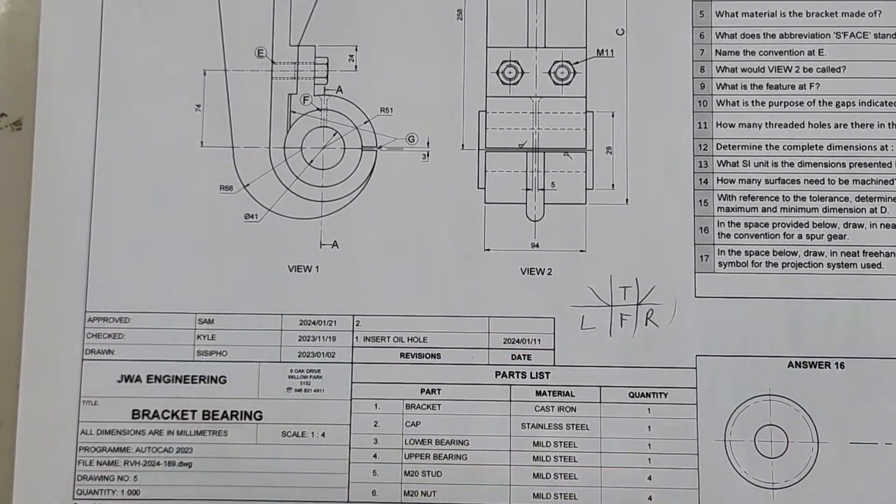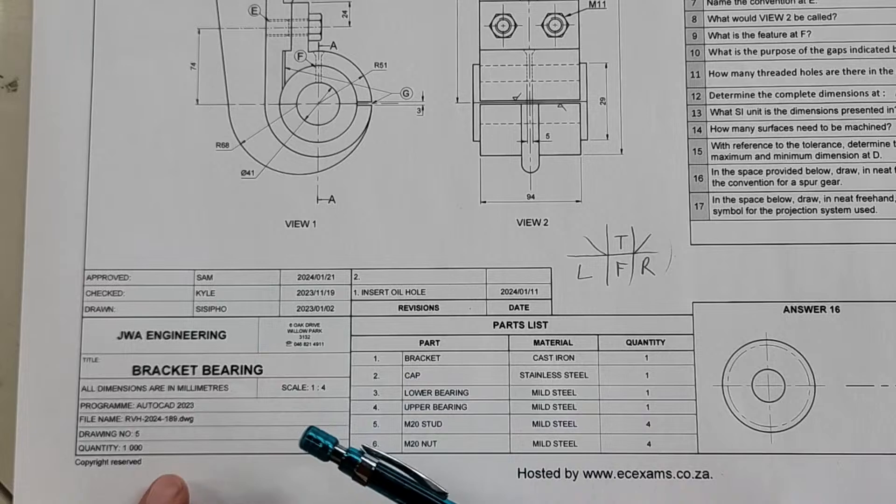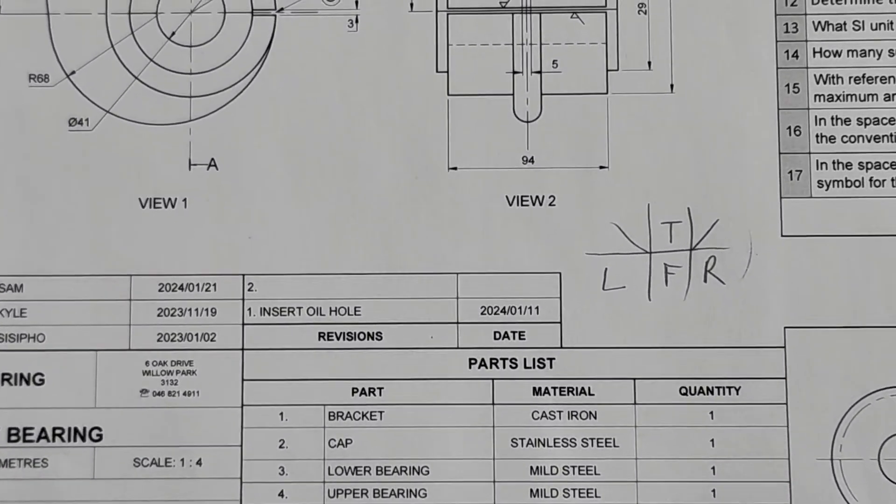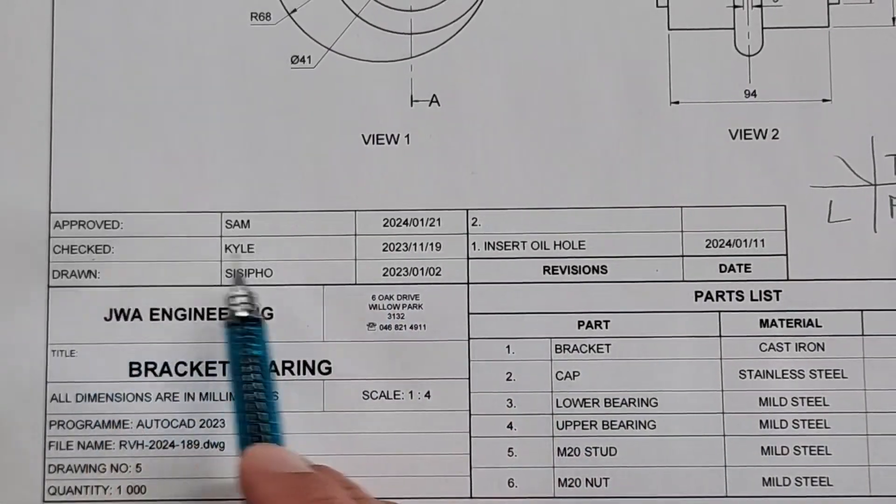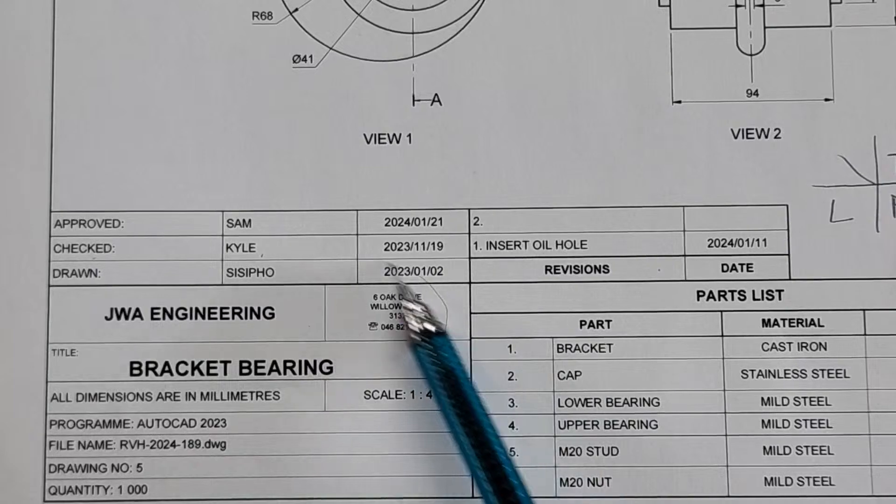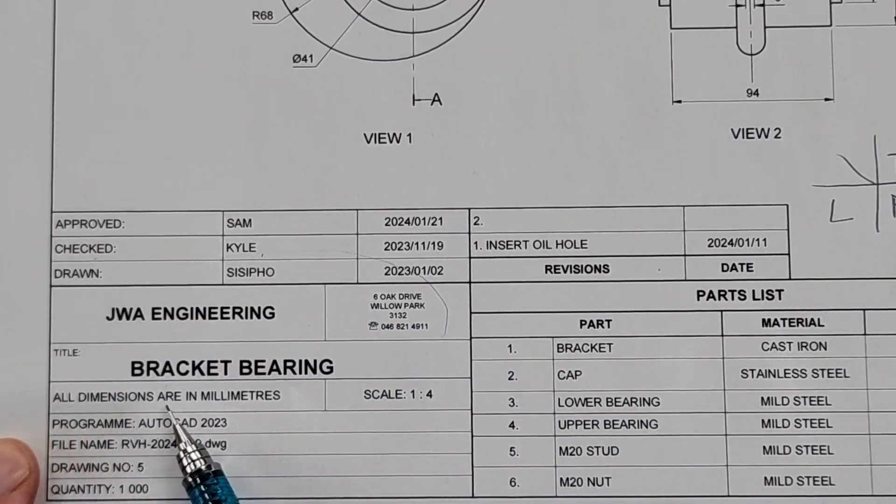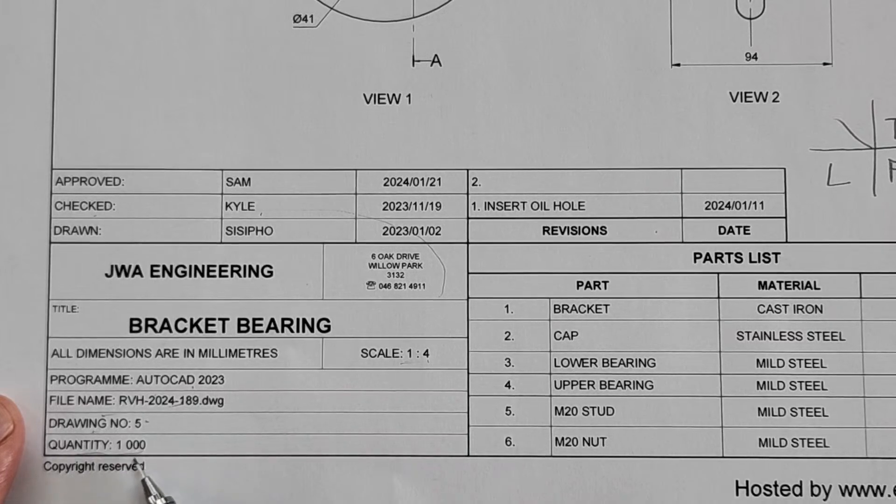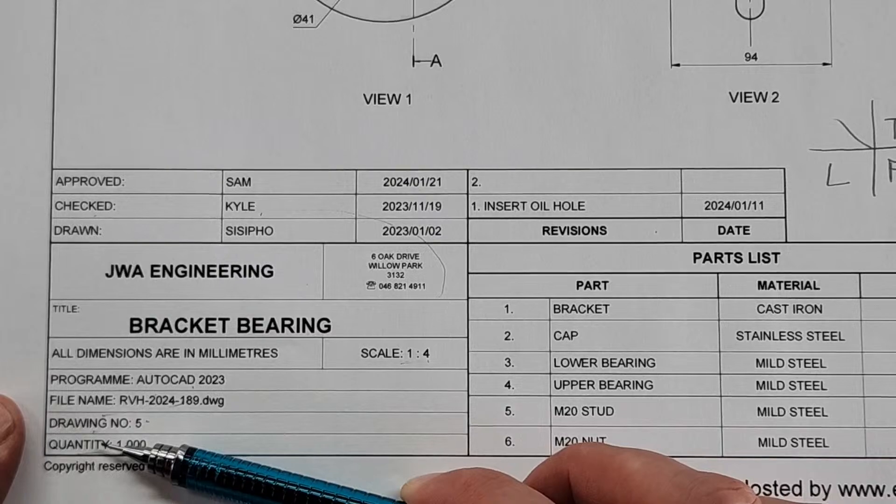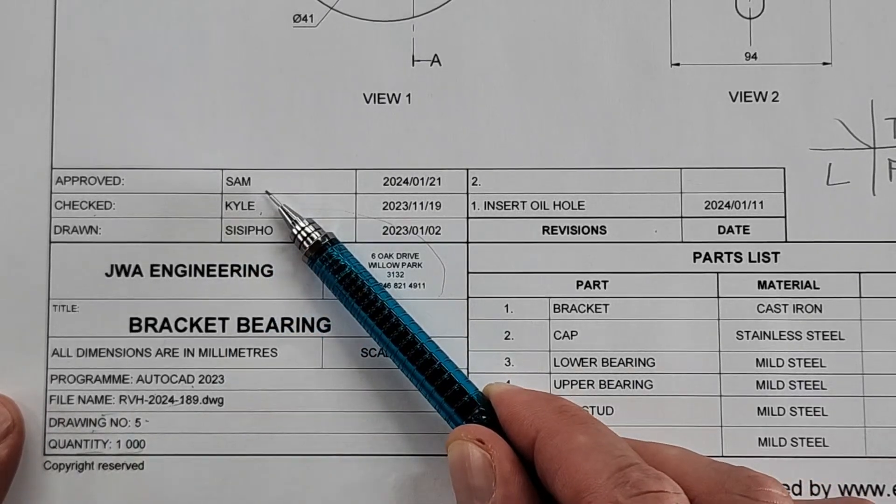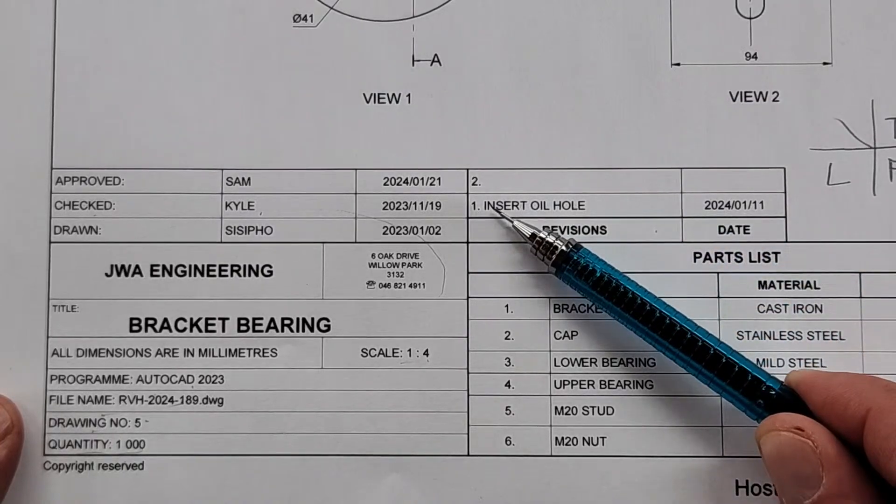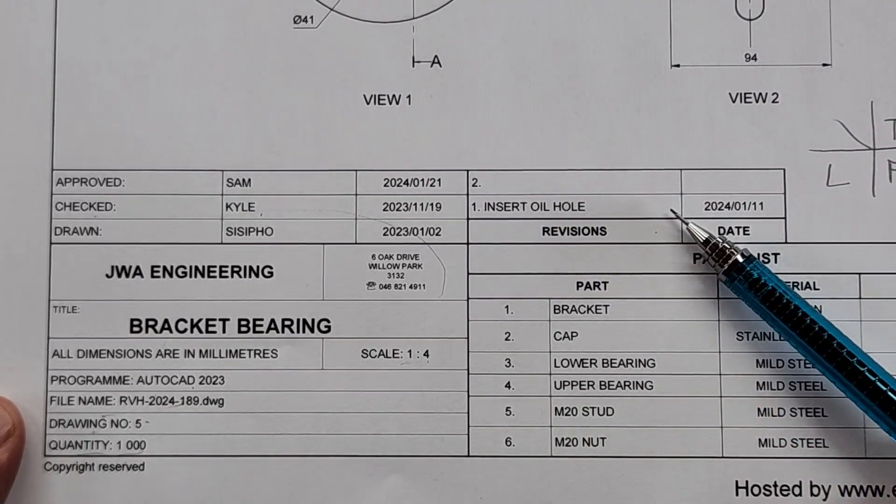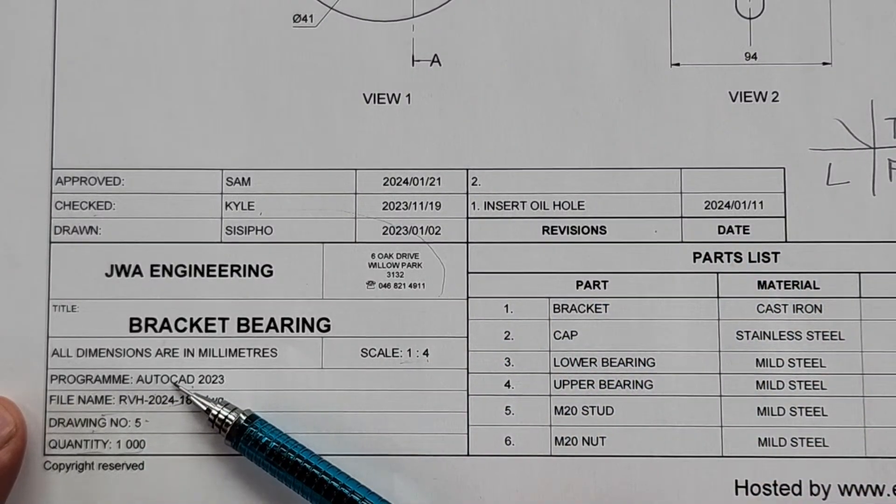We're going to have our information page here at the bottom that's going to have a lot of quick answers locked in. Let's start by looking at the first question: who approved this drawing? It will be in this table, clearly visible for you. This was approved by Sam. The date is also there. If they ask who checked it, it would be Kyle, drawn would be Sysipo, the engineering company. There's another specification: all dimensions in millimeters. They've given you the scale here, then they've highlighted the program to be used, the file name, drawing number, as well as the quantity required.